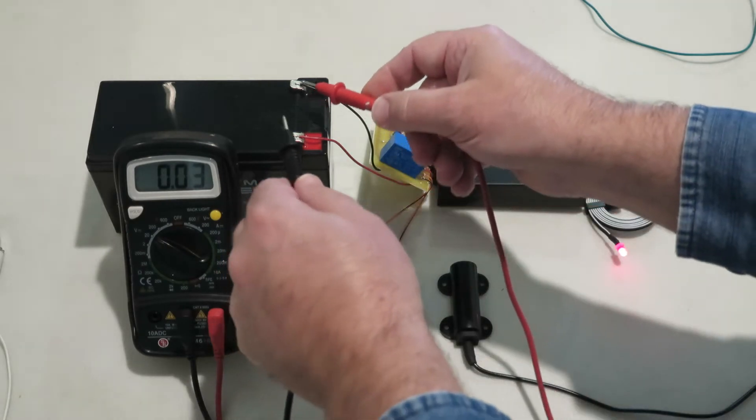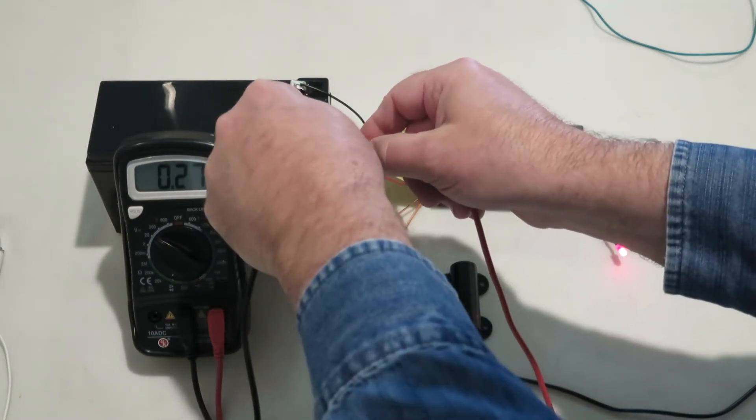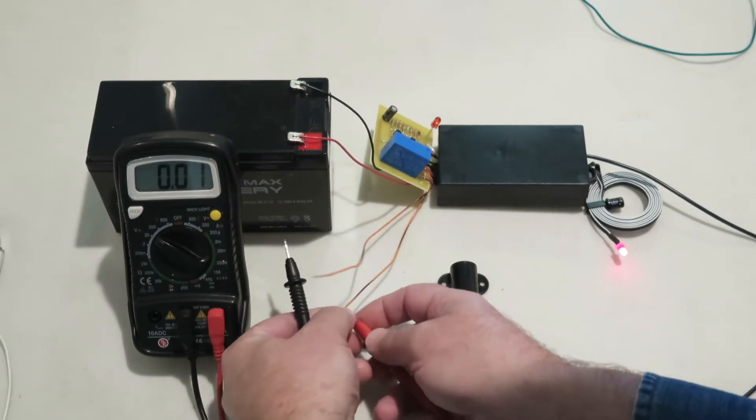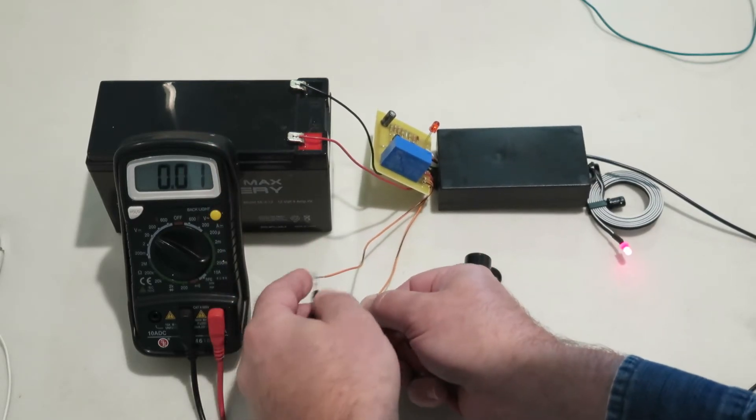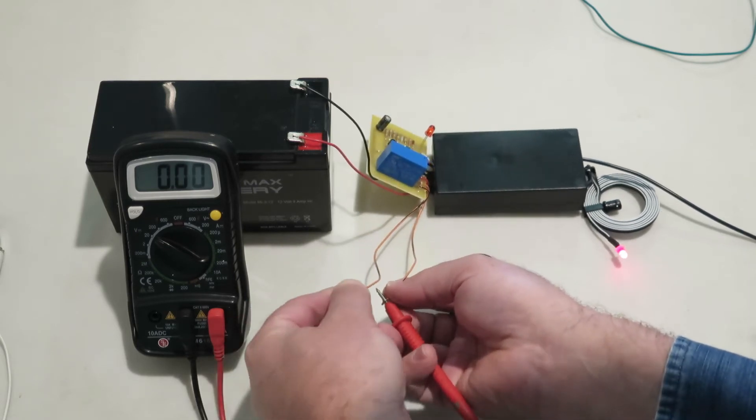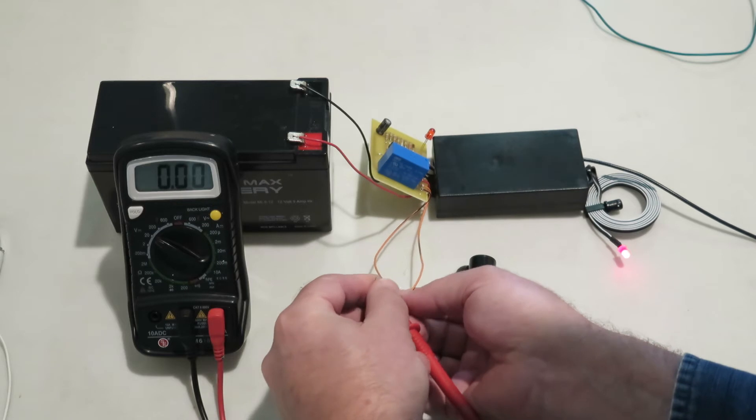There you go, there's 12 volts there and zero volts here. That's correct. When the circuit doesn't collapse, zero voltage as it should be.